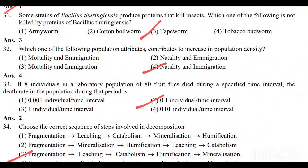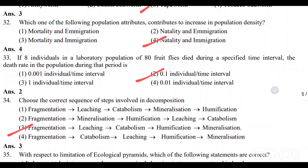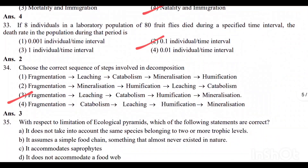Question number 32: Which of the following population attributes contributes to increase in population density? Option 4 — natality and immigration — is the correct answer. Question number 33: If 8 individuals in a laboratory population of 80 fruit flies died during a specified time interval, the death rate is 0.1 individual per time interval. Option 2 is the correct answer.